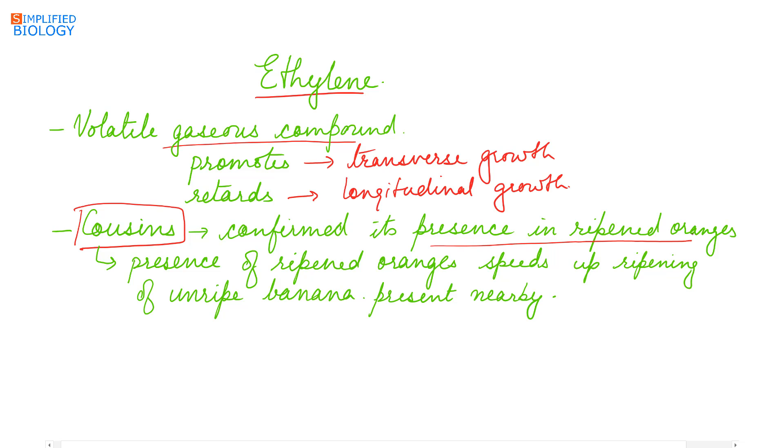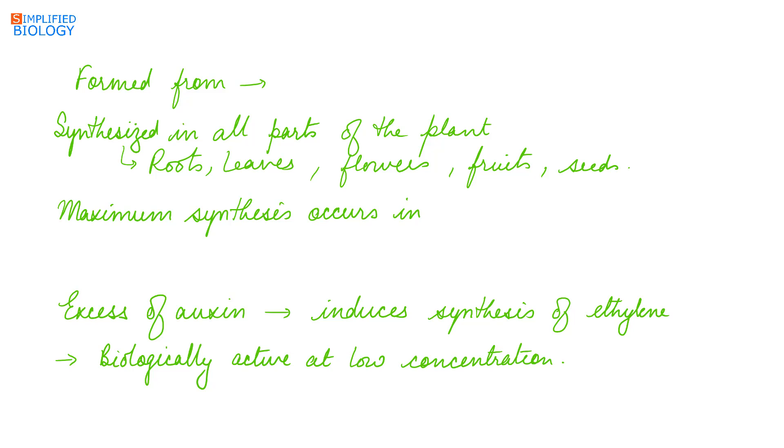It was Cousins who first confirmed the presence of ethylene in ripened oranges. He showed that presence of ripened oranges speeds up ripening of unripe banana present nearby. When rotten or ripe fruits are kept with unripe fruits, the ethylene produced by these rotten fruits causes early ripening of the unripe fruits present.